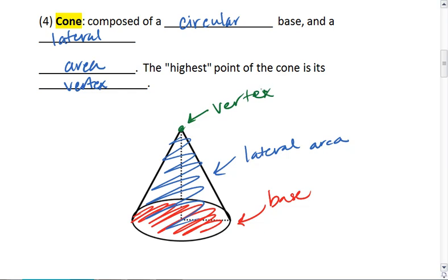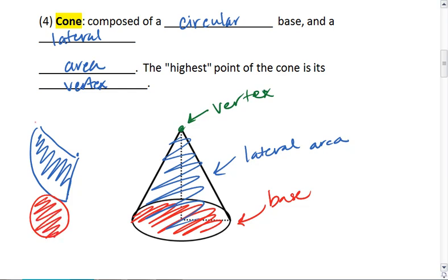The net for a cone looks a little odd. It looks like a circle sector with a circle attached to it, because this blue edge here will wrap around the perimeter or the circumference of the base. And then the vertex is right here.